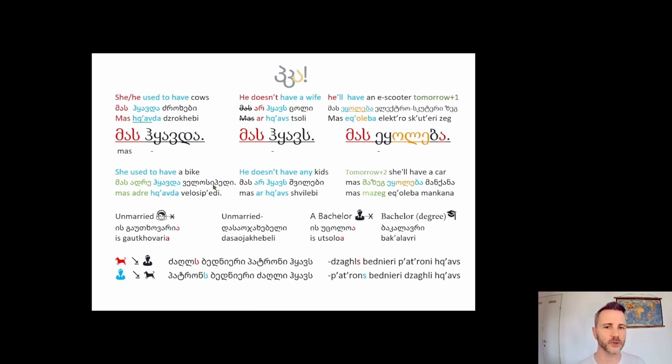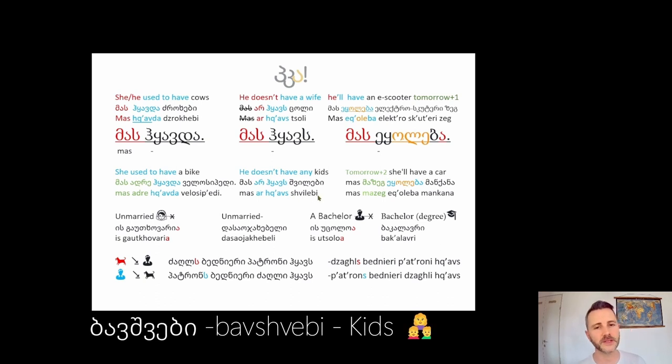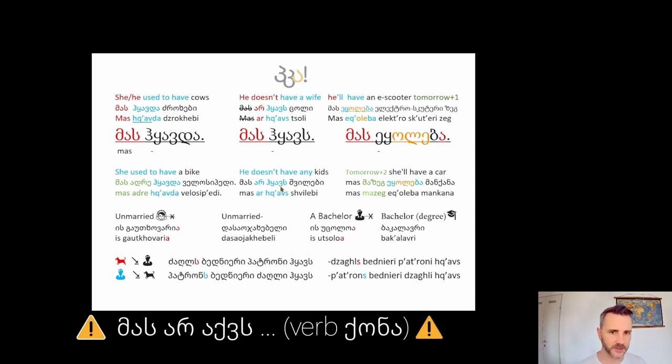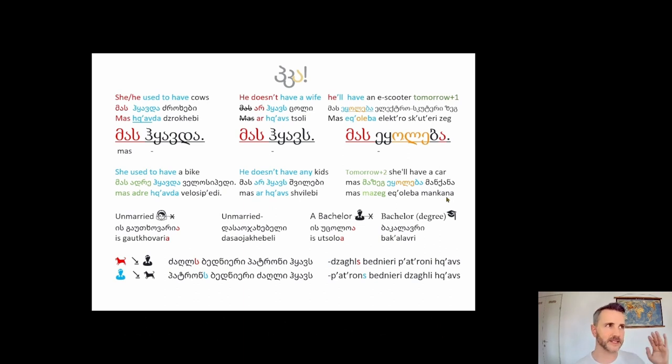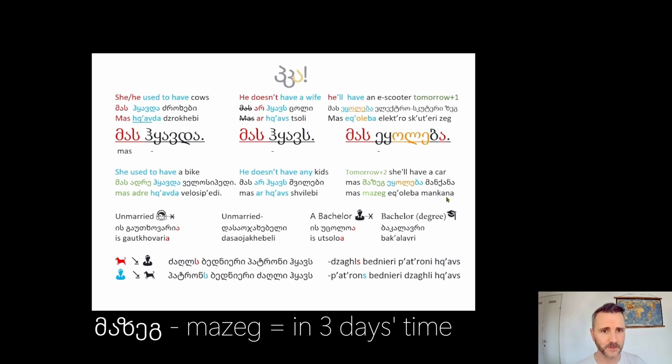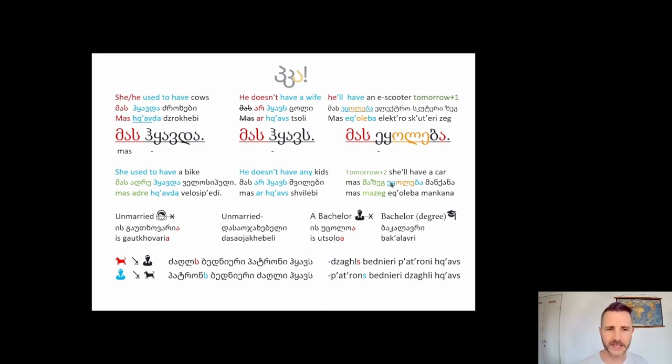Máas ár kávda velosipédi. This person used to have a bike. This person no longer has a bike. Again with Ádre it does help us understand the context a little better. Here we have the word Shvílebi. Bávshvebi is also an option. Máas ár kávda Shvílebi. Not Máas ár akvda Shvílebi, the other two are wrong. Máas ek is the day after tomorrow's tomorrow. Right? Now that really is a Georgian word. The day after tomorrow's tomorrow in three days time. Máas ek oleba Mázeh mankhana. This person is going to have a car in three days time.